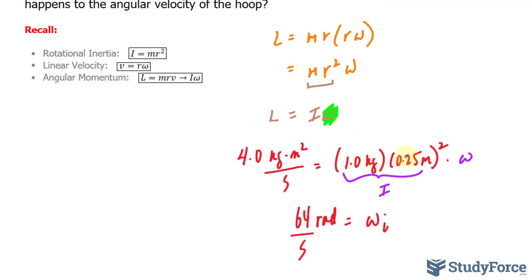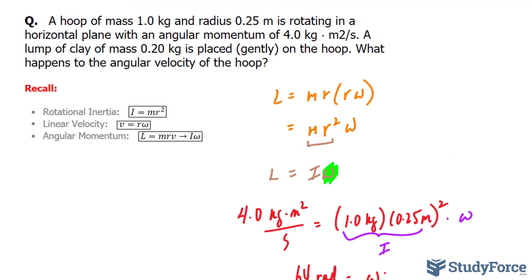Where instead of 1.0 times 0.25 raised to the power of 2, it will be a sum of two moment of inertia. So we have this one, which we will rewrite. And I'll ignore the units because I know what the end product will be.